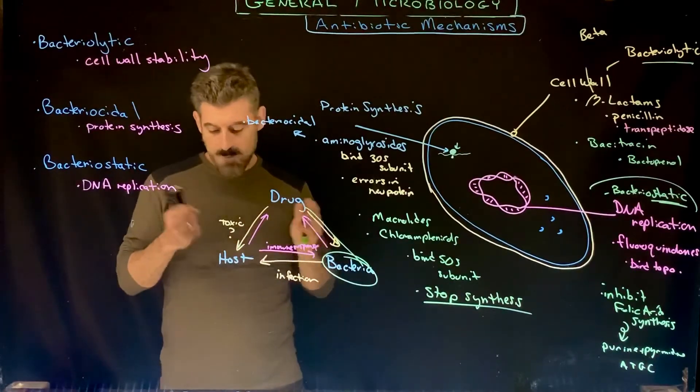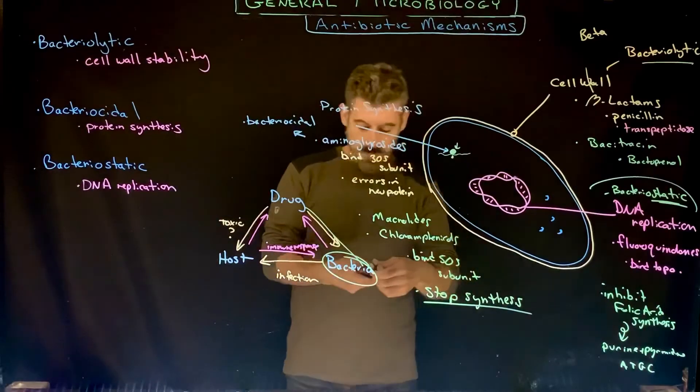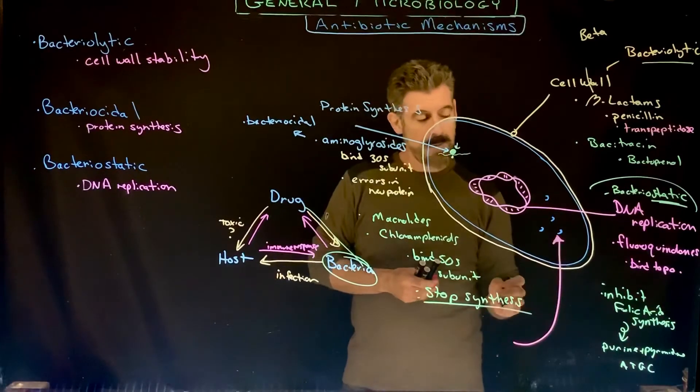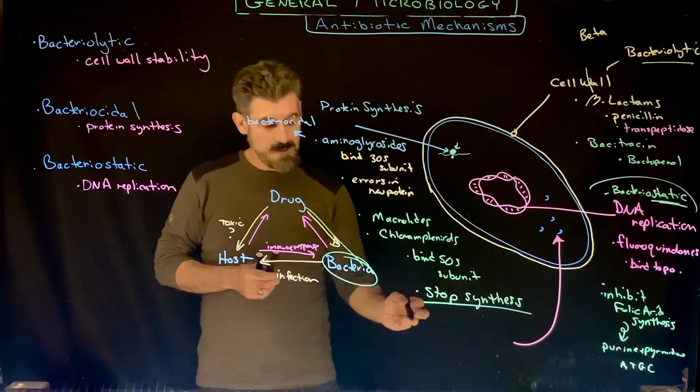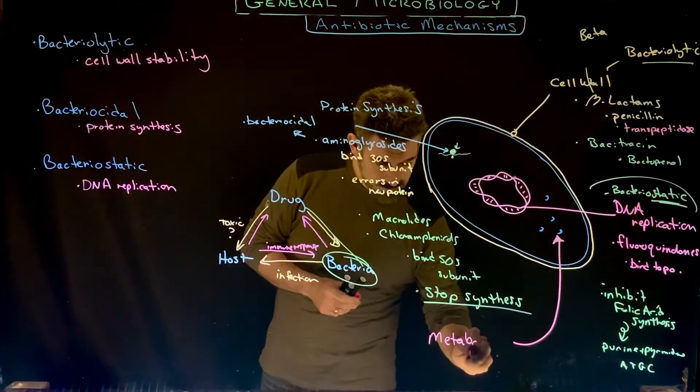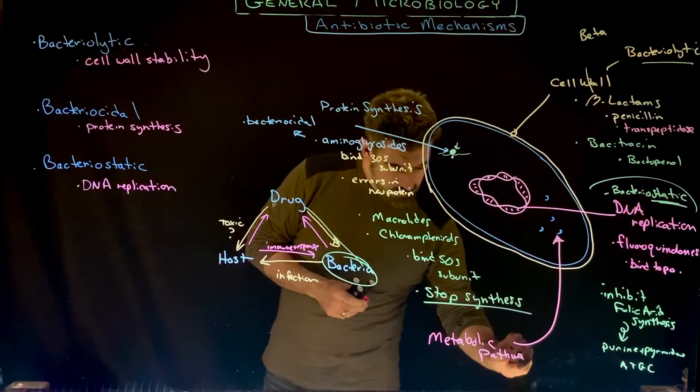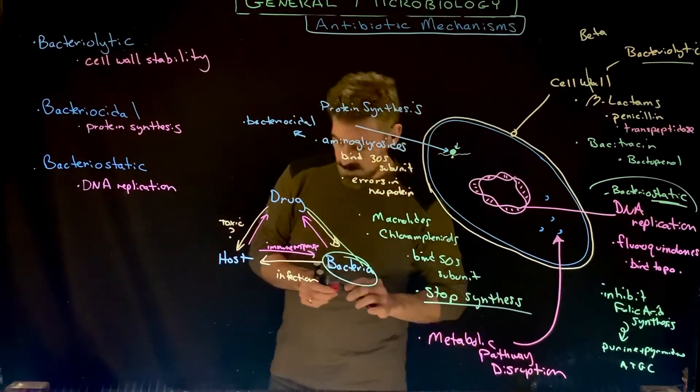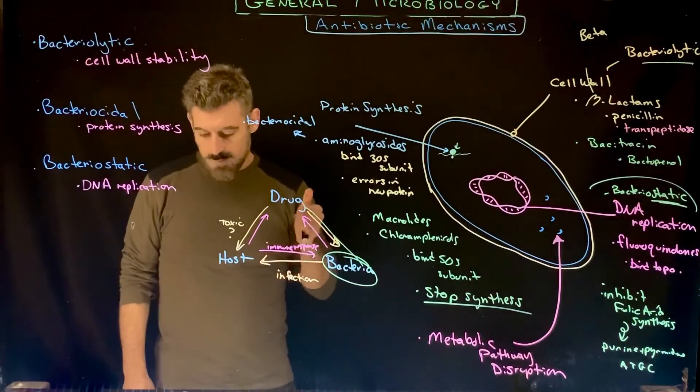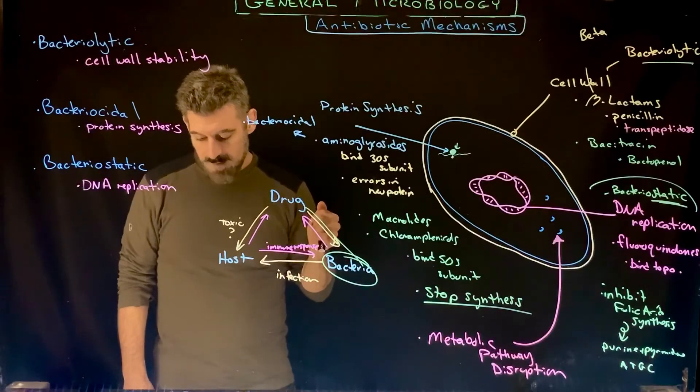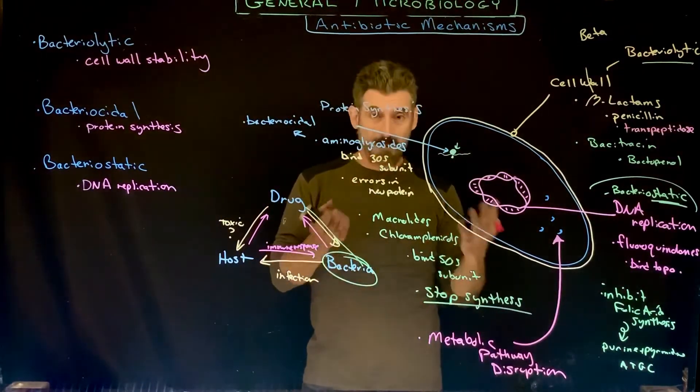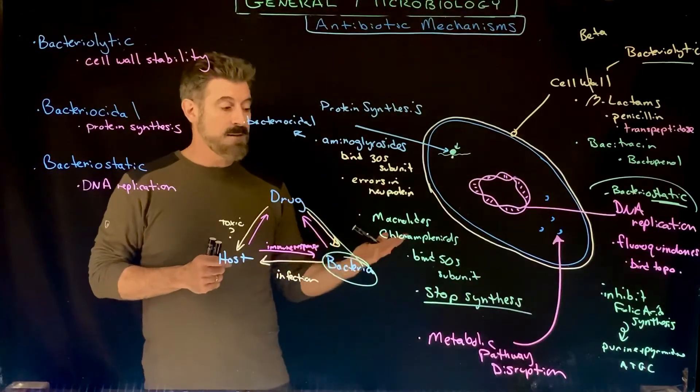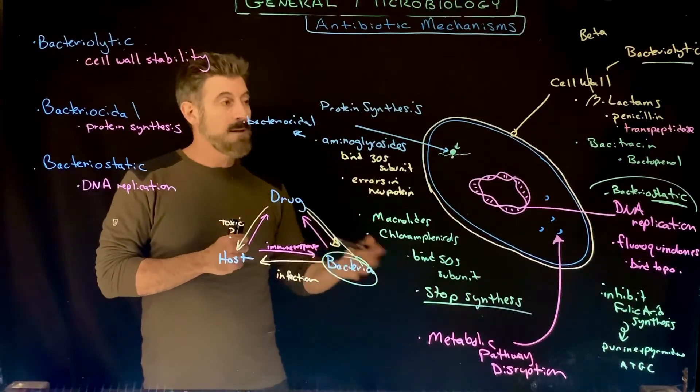There are also other types of antibiotics that are going to affect the proteins that are your enzymes - metabolic pathways. The disruption of those that are going to disrupt the metabolic pathways will cause a whole variety of different types of effects on the cell, again usually resulting in cell death, but they could potentially just be static depending again on what particular enzymes that they are blocking.